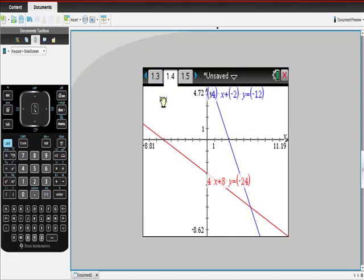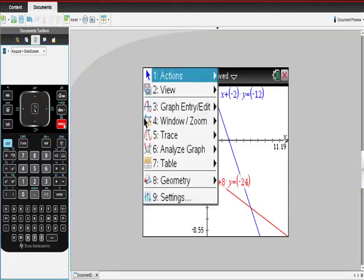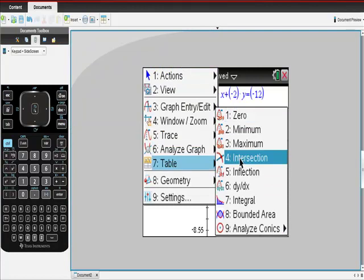And then what you do to find the intersection, instead of putting it into slope-intercept form, is you just go here, and you go to menu, analyze graph. So analyze the graph, find intersection.